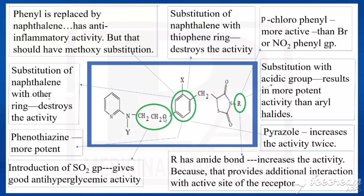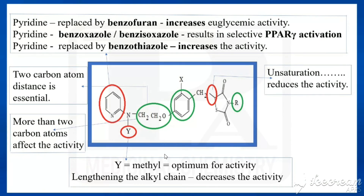Now come to the ethoxy group. Instead of this ethoxy group, if we are introducing an SO2 group, we are getting good anti-hyperglycemic activity — so that activity would be increased. Here it is having only two carbons; if you are introducing more than two carbons, that will affect the activity negatively.